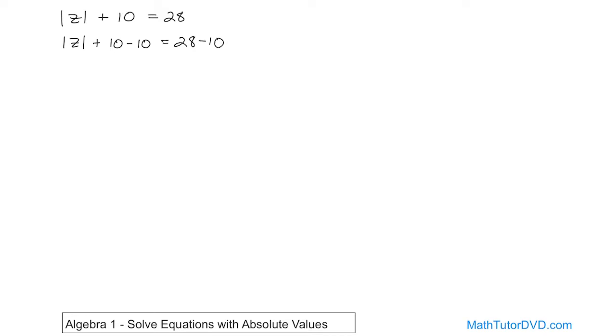On the left-hand side, the tens go away giving you zero, so you have absolute value of z is equal to — what is 28 minus 10? It's a straight subtraction. That's just going to be 18.